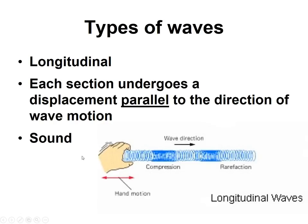The second type of wave is called a longitudinal wave. In this one, the motion is parallel to the displacement of the particles. If you imagine a slinky being pushed back and forth, the transfer of energy and the vibration are both horizontal. An example of this would be a sound wave, and that's what we're going to focus on in this unit.